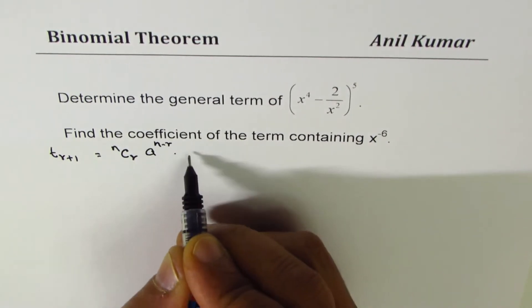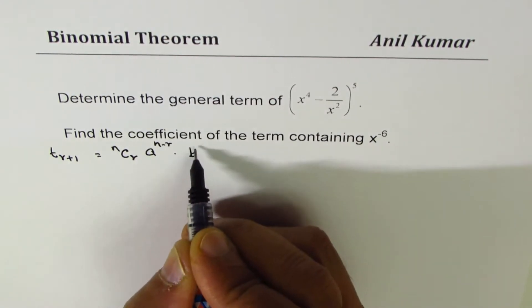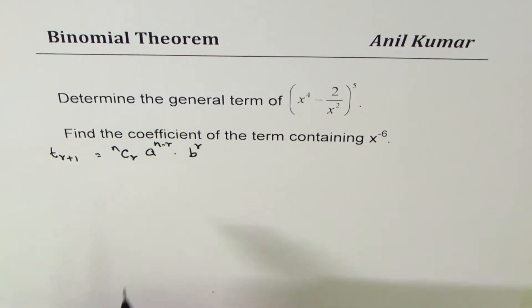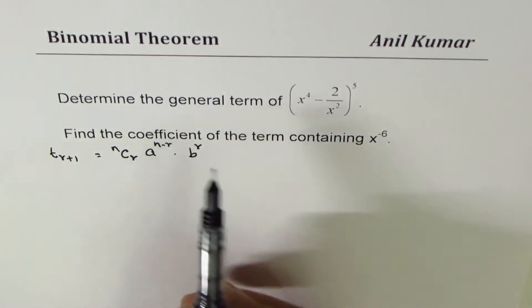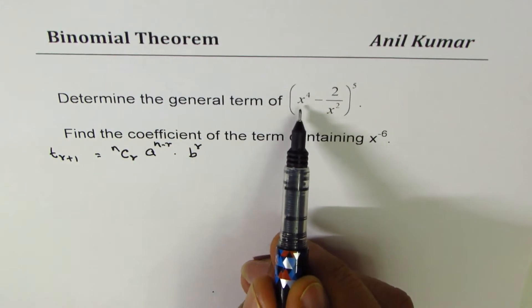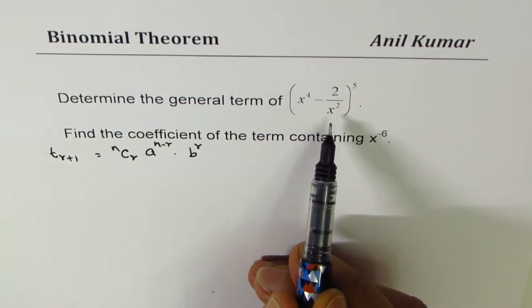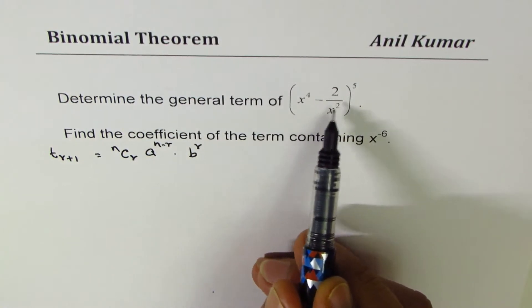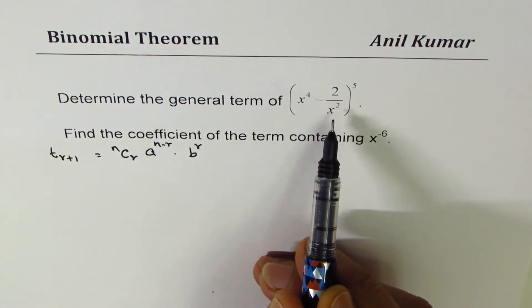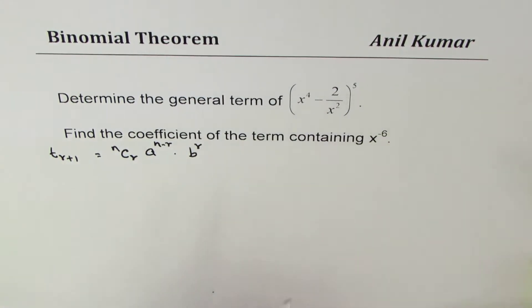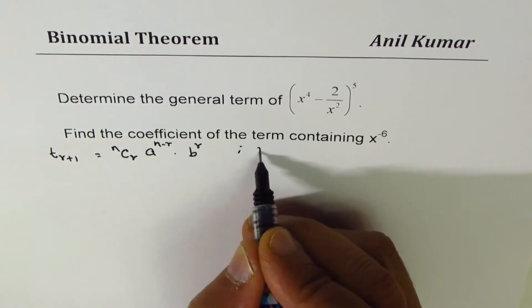In our case, the first term is x^4 and the second term is -2/x^2. n in our case is 5, so n equals 5, a equals x^4.